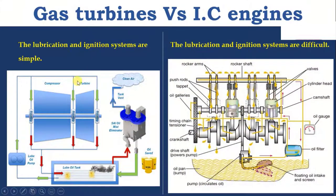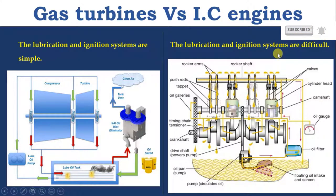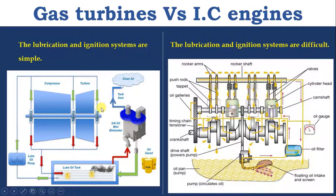In gas turbine, the lubrication and ignition system are simple, whereas in IC engine they are difficult. As seen in the diagram, the compressor and turbine are connected on a single shaft, so lubrication is required only for the bearings of the compressor and turbine. Gas turbine has fewer moving parts compared to IC engines. In IC engine, many moving components are present such as piston, connecting rod, crankshaft, camshaft, and valves — hence the lubrication system is complicated and difficult in IC engines.